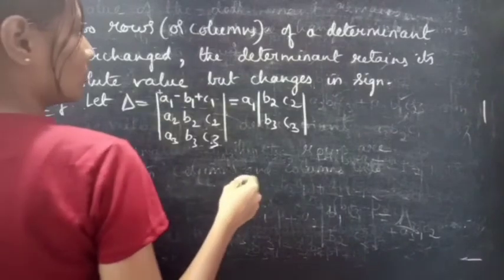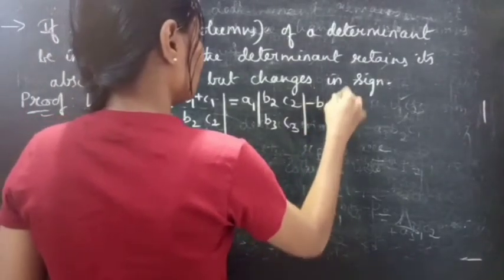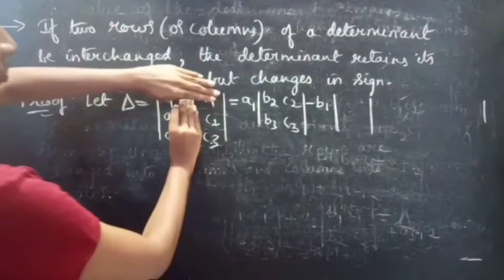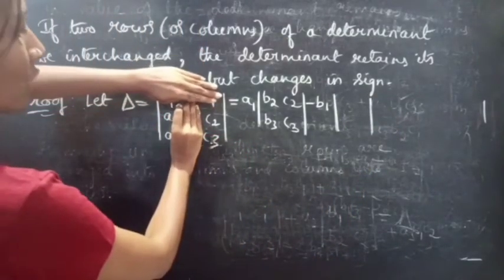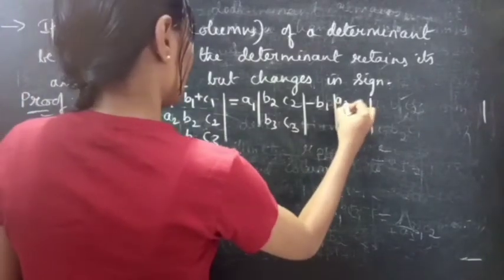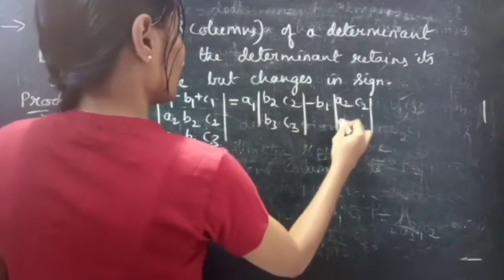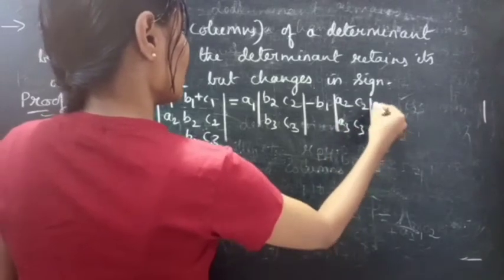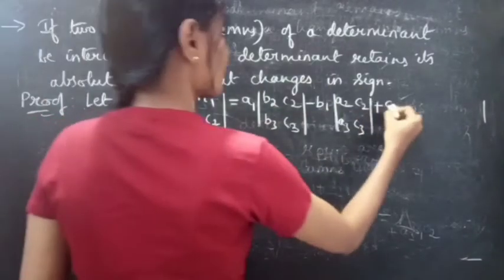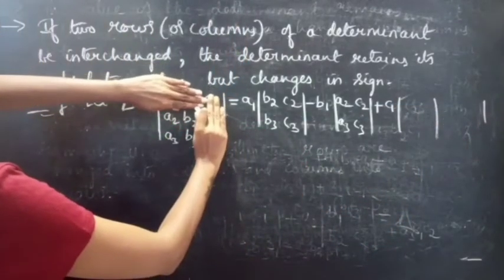Minus b1 into det of a2, c2, a3, c3, plus c1 into det of a2, b2, a3, b3.